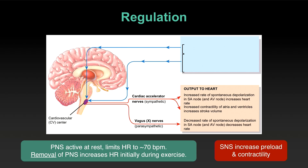What isn't shown on the flowchart is the sympathetic nervous system's input on the atria. If the SNS makes the ventricles contract more forcefully, it also makes the atria contract more forcefully. The job of the atria is to load the ventricles with blood, so this increases the blood available to be pumped — that's increased preload. So we have higher preload and higher contractility: a two-pronged approach to increase stroke volume.